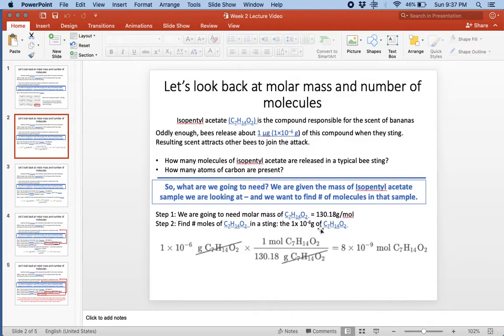We need to find out the number of moles in a sting. If we know we have this many grams in a sting, we can figure out how many moles that would be using our molar mass. Our given, if we're doing dimensional analysis, would be our sting: one times 10 to the negative 6 grams of isopentyl acetate. We can use the conversion factor to go from grams to moles of isopentyl acetate using our molar mass. Always make sure your units cross out. Let your units be your guide. The 130.18 needs to be on the bottom so the grams cancel out.